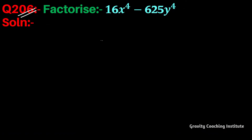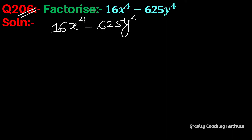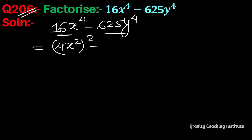Question number 206: factorize 16x to the power 4 minus 625y to the power 4. So we change both terms into square form: 16 is 4 squared, giving us (4x²)² and 625y⁴ becomes (25y²)².